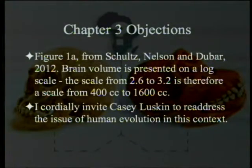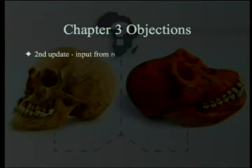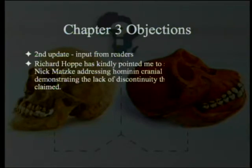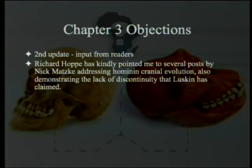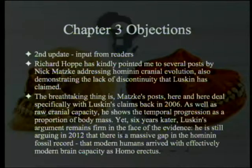McBride says: 'I cordially invite Casey Luskin to readdress the issue of human evolution in this context.' Then there's a second update from reader input: Richard Hoppe has kindly pointed out several posts by Nick Matzke addressing hominid and cranial evolution, demonstrating the lack of a discontinuity that Luskin has claimed. The breathtaking thing is that Matzke's posts deal specifically with Luskin's claim back in 2006, as well as raw cranial capacity showing a temporal progression as a proportion of body mass. Yet six years later, Luskin's argument remains firm in the face of the evidence — he is still arguing in 2012 that there's a massive gap in the hominid fossil record.